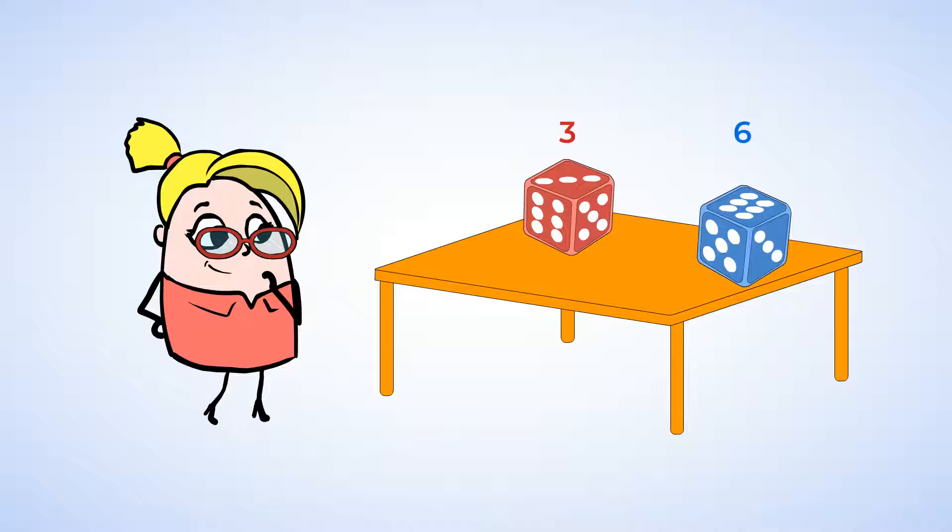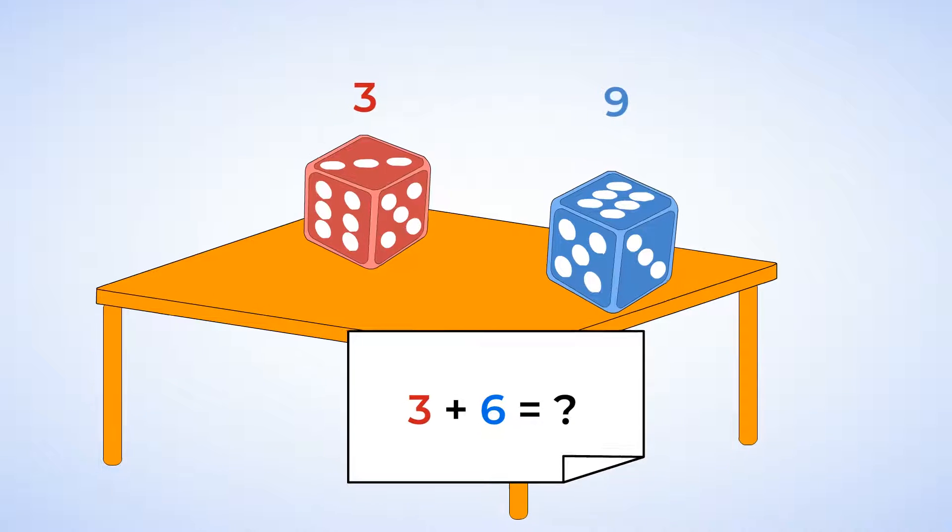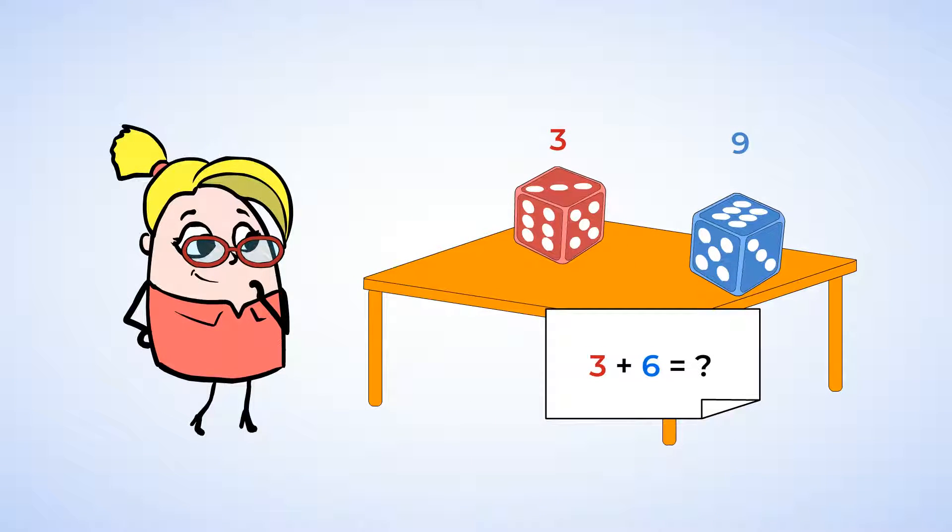Well, let's try both ways to see what happens. If we start with the three first, the addition sentence will look like this. Three plus six equals what? Let's find the missing number by counting on. Three, four, five, six, seven, eight, nine. There are nine dots in total. The complete addition sentence is three plus six equals nine.